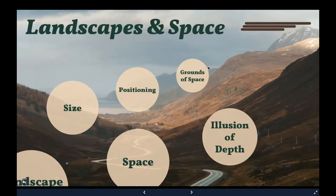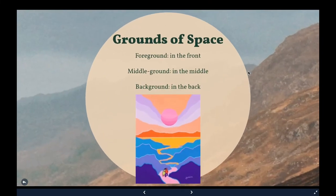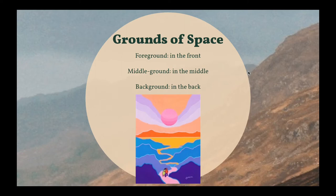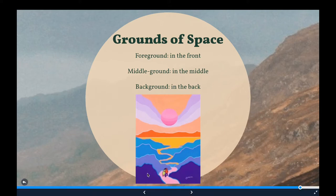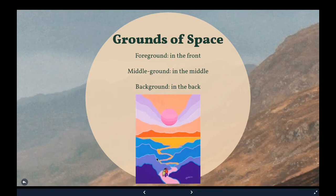Lastly, the grounds of space. There are three grounds of space: foreground, middle ground, and background. Foreground is near the front. Middle ground is in the middle, and the background is in the back. If I'm looking at this artwork by Ted Harrison, the people and the dark blue, almost purple mountains are in the foreground. The lighter blue mountains and that yellowish path or river is in the middle ground. And in the background, there are the orange mountains and the sky — that's farthest away.